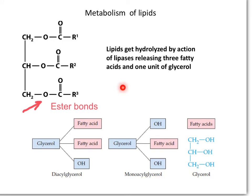The metabolism of lipids will produce two different kinds of products. Initial hydrolysis of the triglycerides by the action of lipases will produce a unit of glycerol and three fatty acids, by breaking three ester bonds. The unit of glycerol will enter the glycolysis pathway, and the fatty acids will undergo beta-oxidation.